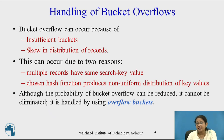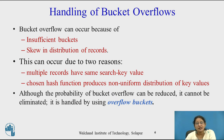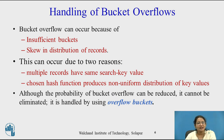How do we handle overflow? Bucket overflow can occur because of insufficient buckets and skew in distribution of records. This can occur due to two reasons: multiple records have the same search key value, and the chosen hash function produces a non-uniform distribution of key values. Although the probability of bucket overflow can be reduced, it cannot be eliminated. It is handled by using overflow buckets.